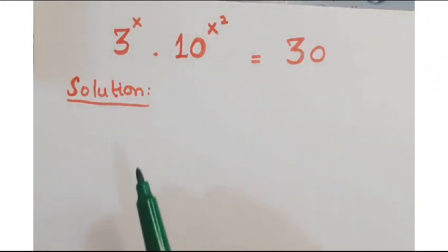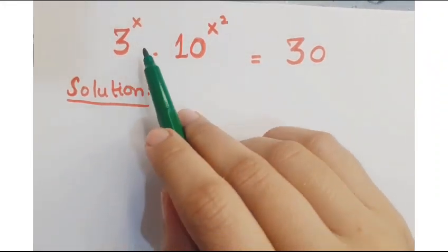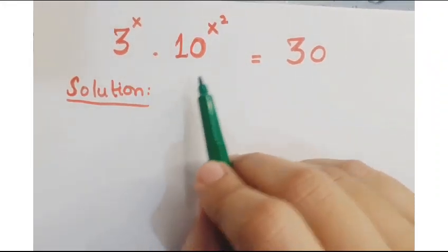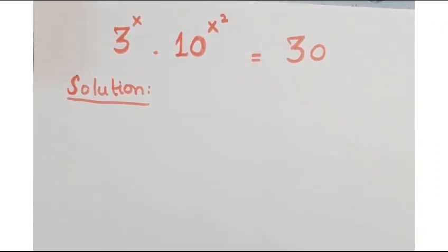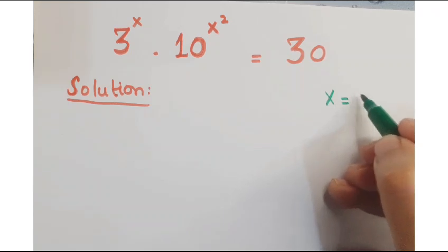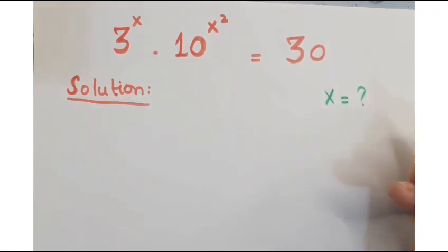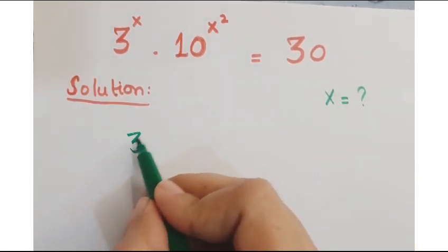Hi guys, look at this question. The question is 3 to the power x into 10 to the power x squared is equals to 30, and we have to find the value of x. Let's see how we proceed in this question.